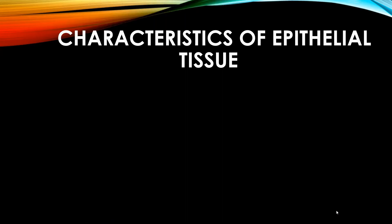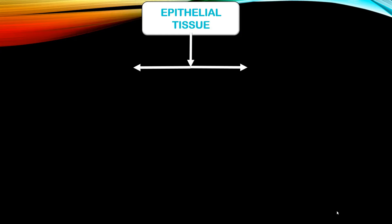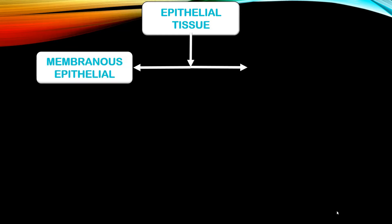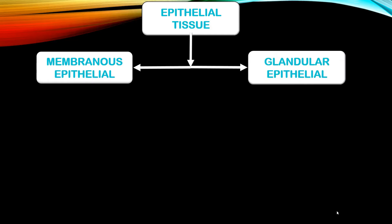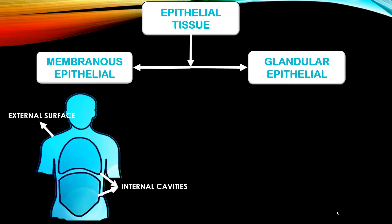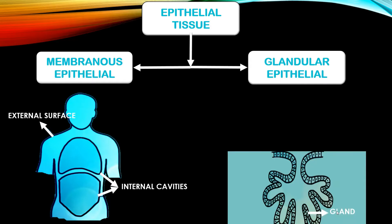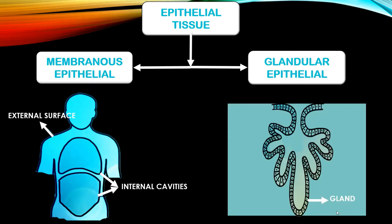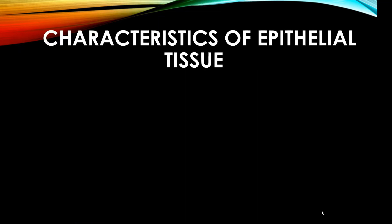Epithelial tissue can be divided into two types: membranous epithelial and glandular. Membranous epithelial covers and lines the external surface of our body as well as the lining of all internal cavities, organs, tubes, and passageways. Glandular epithelium is specialized epithelial tissue that produces and secretes substances such as sweat, stomach acid, mucus, and hormones. Despite many different types, all epithelial tissues share just five characteristics.